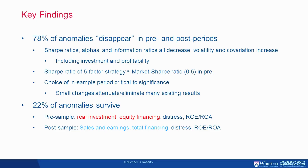The glass-is-three-quarters-empty finding: 78% of the anomalies we look at completely disappear in terms of economic and statistical significance in the pre-sample and post-sample periods. Sharpe ratios, alphas, and information ratios all decrease dramatically, while volatility and co-variation ramp up once you move out of sample — either back in time or forward in time. This includes investment and profitability.